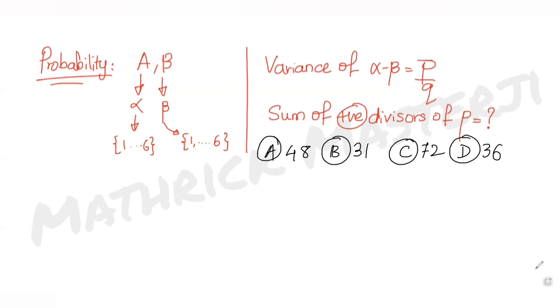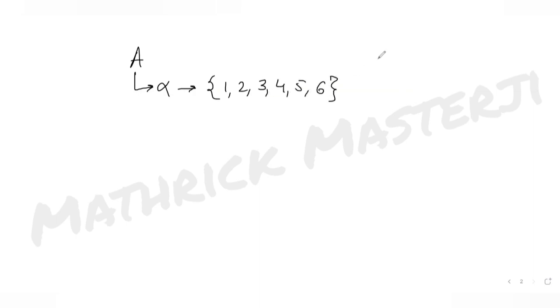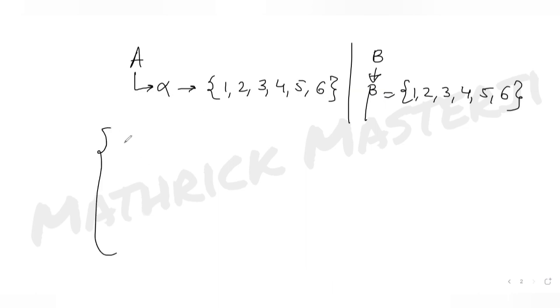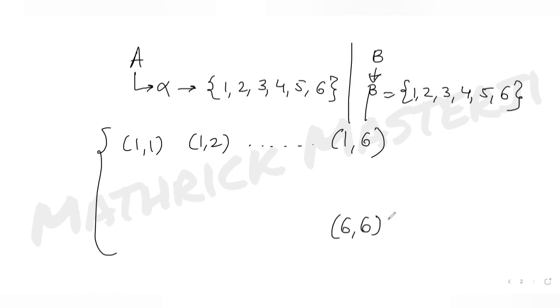Starting the solution: dice A has outcomes alpha from one to six, and dice B has outcomes beta from one to six. The combined outcomes go from (1,1), (1,2) up to (1,6), then (2,1) through (6,6), giving 36 total outcomes. We want to find alpha minus beta, the difference between the two dice.